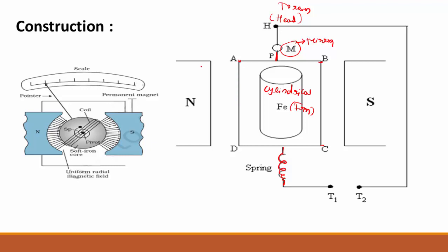The pole pieces are curved and coaxial with the cylinder. This arrangement provides a strong, uniform radial magnetic field in the gap between the pole pieces and the cylinder. For all positions of the coil, its plane is parallel to the direction of the magnetic field. This is the construction of the moving coil galvanometer.